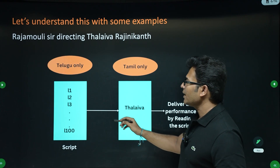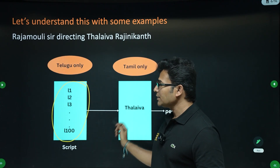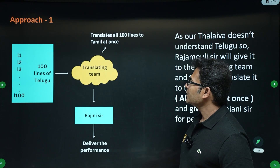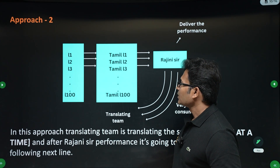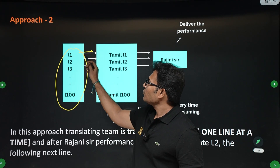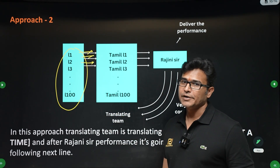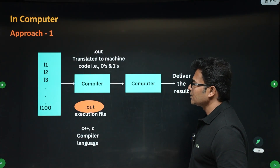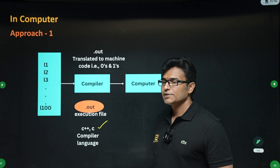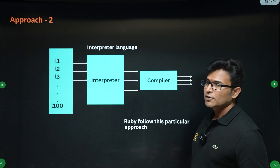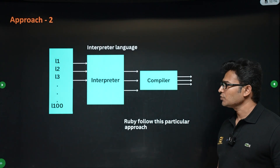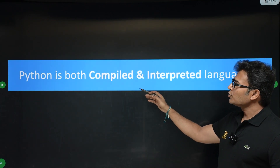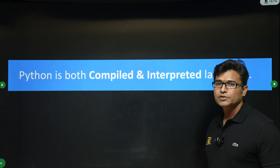So if you are converting the entire script into Tamil, that is compiled. If you are converting step by step, line by line, one line after another into Tamil, then that is called interpreted — simple, right? Looking at language examples: C and C++ use a compiler, while Java and Python use both compiler and interpreter. So Python is both a compiled and interpreted language.